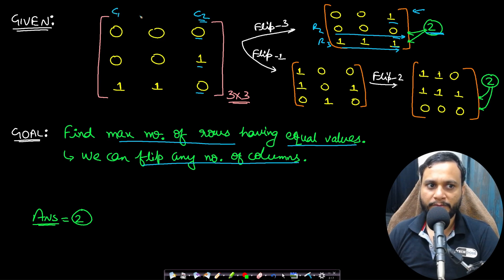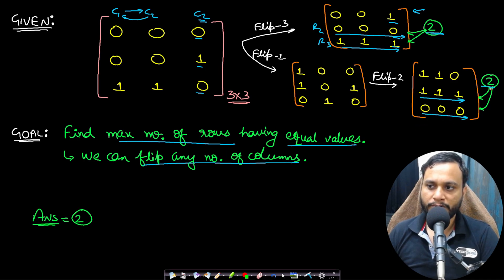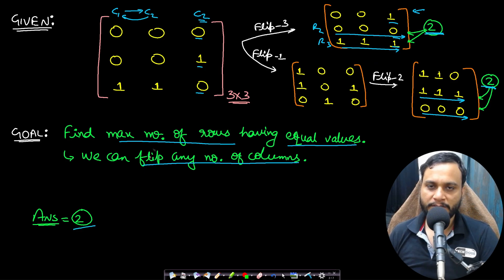If instead we flip column 1 and then column 2, we again end up with a matrix where row number 2 and row number 3 are equal rows, giving two equal rows. In any possible combination of flips you will not find more than two equal rows, so the answer to this problem is 2.